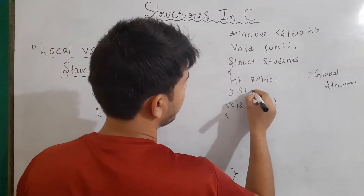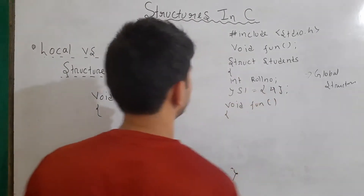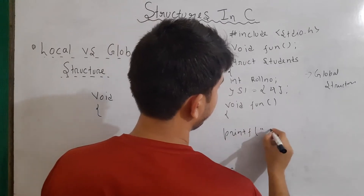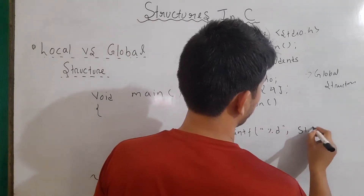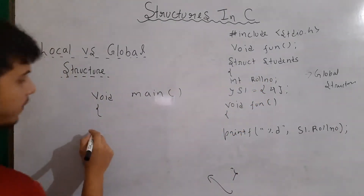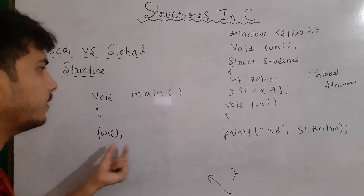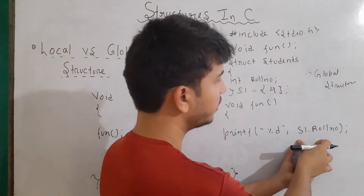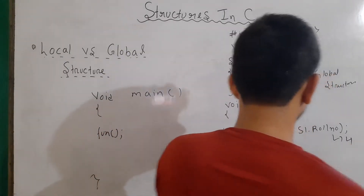Let's say I initialize our variable with the content of 4. So, I write here printf person d and then I write here s1 dot roll number. And from here, I am calling our function. So in this case, this function will be called and this variable will be accessible to this function. Here the output will be 4.